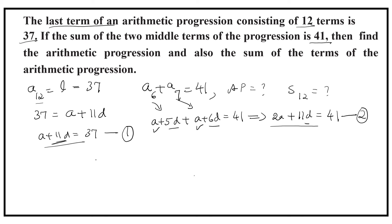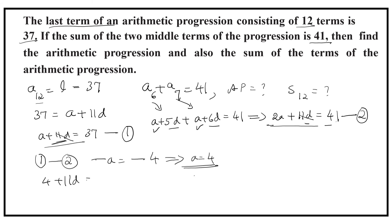This is the first equation and this is the second equation. Subtracting equation 1 from equation 2, the 11d terms cancel. We get: 2a minus a equals 41 minus 37, that is 4. So a equals 4. Substituting a equals 4 in equation 1: 4 plus 11d equals 37, so 11d equals 33, and d equals 3.